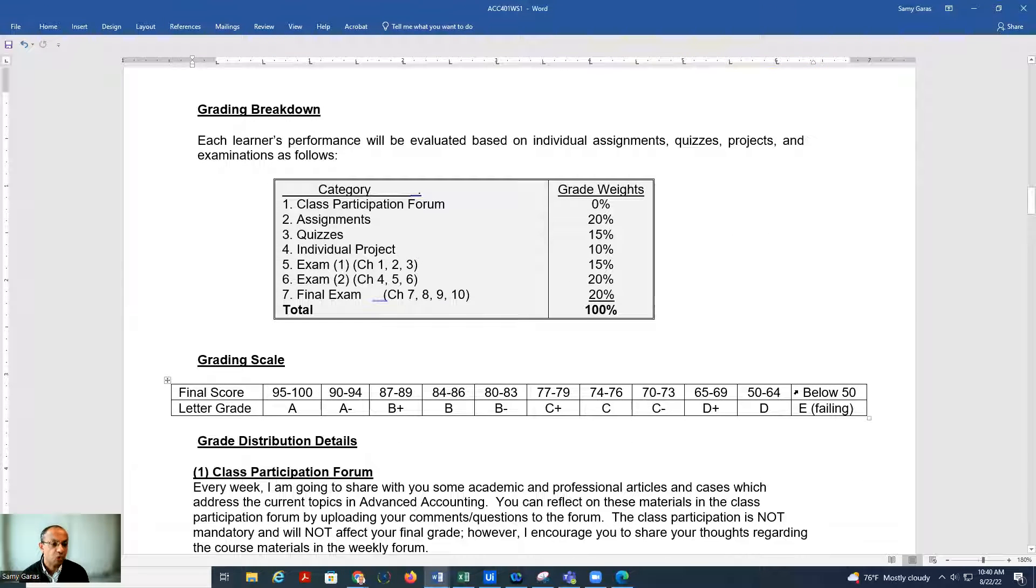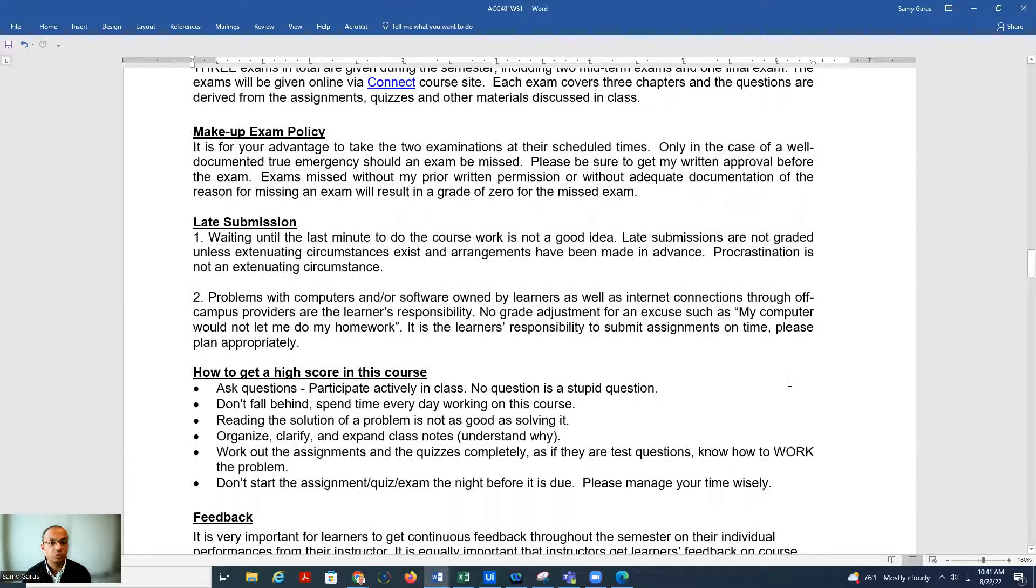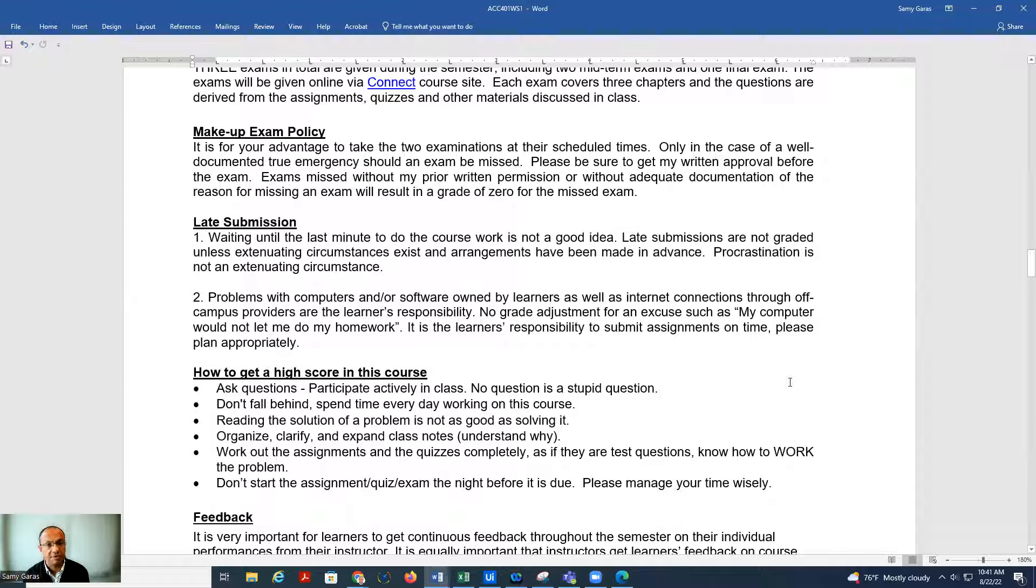The passing score in this course is 50%, not 60, and it's similar to the accounting information system because the higher level courses have lower passing grade.